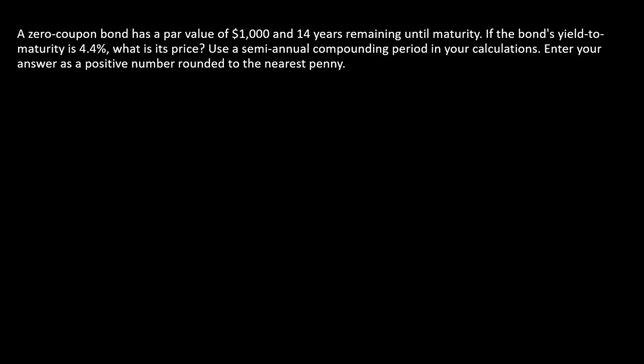Here we have a zero coupon bond, and a zero coupon bond is exactly what it sounds like. It's a bond that has a coupon of zero. And so what does that mean for the timeline? Well, that means there are no coupon payments and a single lump sum payment of the par value at maturity.